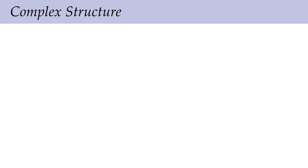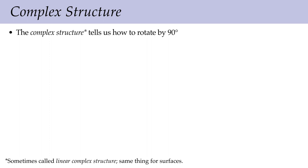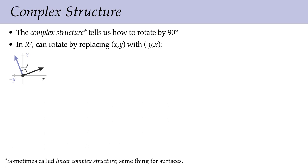We need to define the Hodge star on one-forms, and to do this we need to define the complex structure. The important idea behind the complex structure on a surface is that it tells us how to rotate tangent vectors by 90 degrees. Our most familiar example: in two-dimensional space R2, we can rotate a vector (x,y) by 90 degrees by swapping the components and negating the first one — (x,y) becomes (-y,x). A two-by-two matrix that turns (x,y) into (-y,x) would exchange the components and negate one of them.